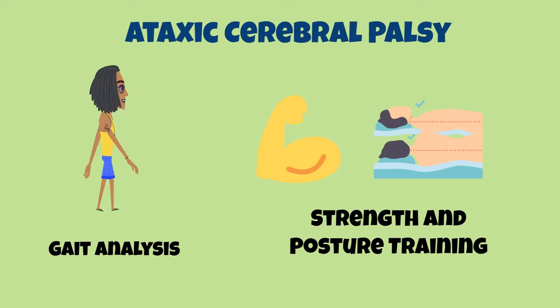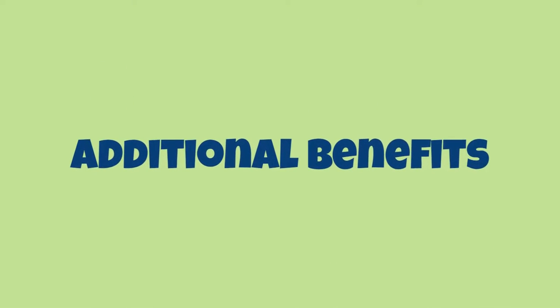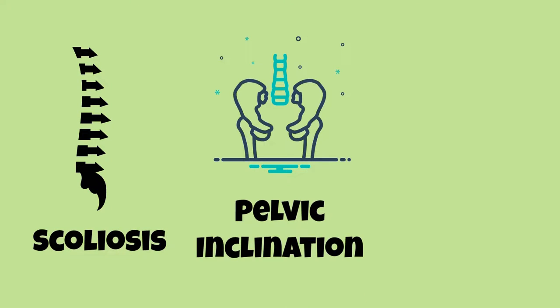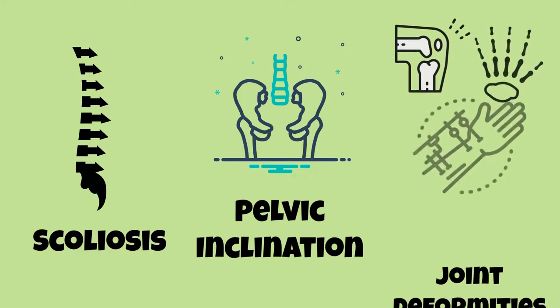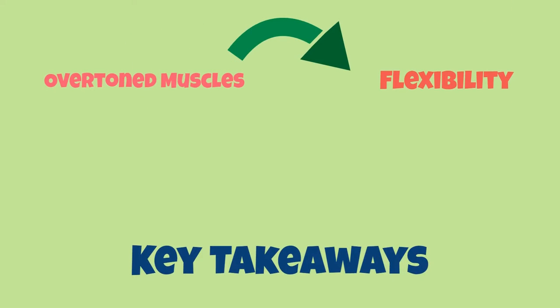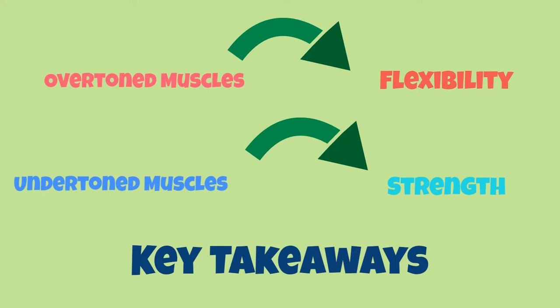Additionally, through physiotherapy, several other conditions associated with cerebral palsy can be improved upon, such as scoliosis — which is the abnormal curvature in the spine — pelvic issues such as pelvic inclination, which is the protrusion of the pelvis either forward or backward, and knee, wrist, or hand deformities such as the abnormal flexing or straining of these joints. Physiotherapy for cerebral palsy patients will focus on improving muscle tone, either by incorporating flexibility training for overtoned muscles or strength exercises for undertoned muscles, and will also assist in improving posture and walking.